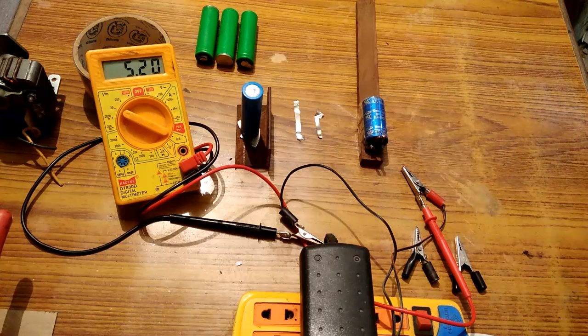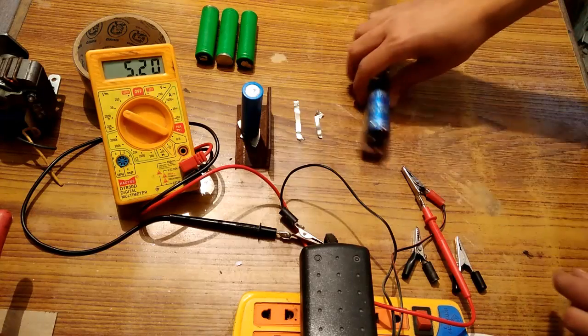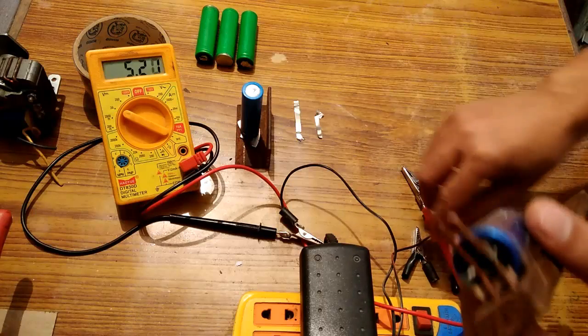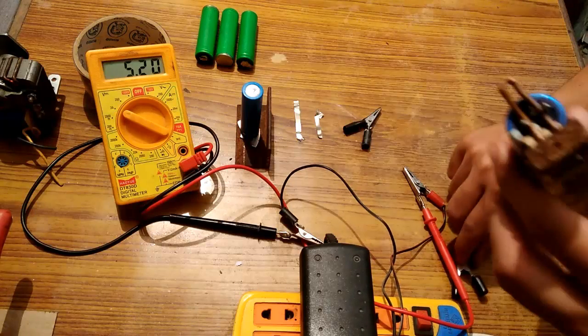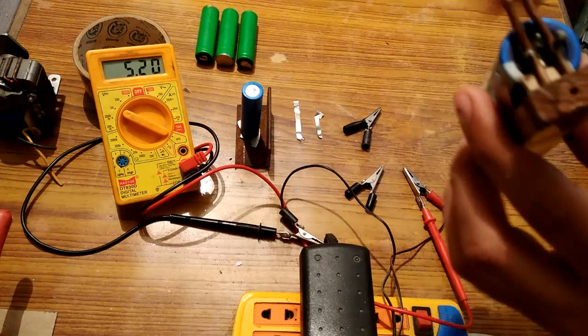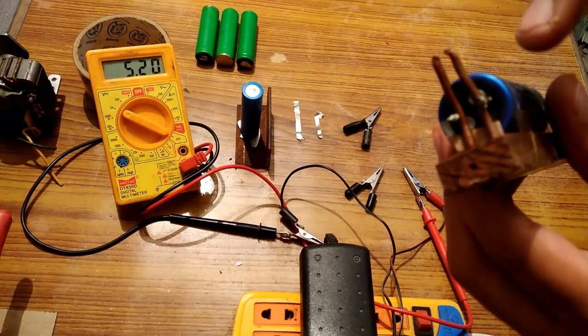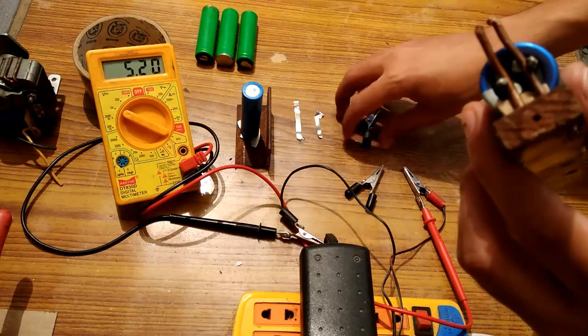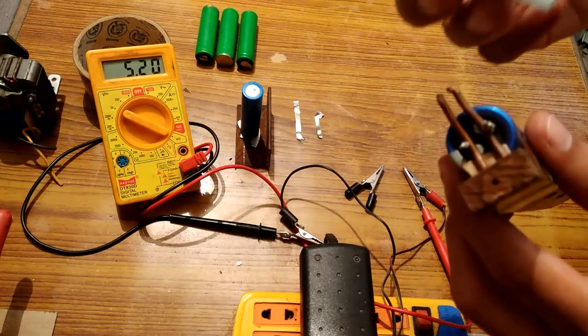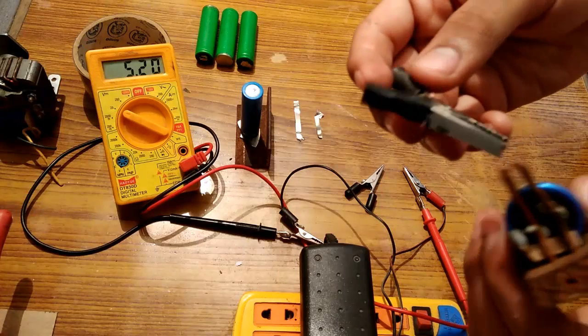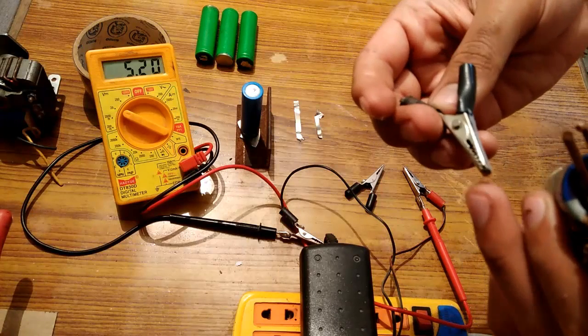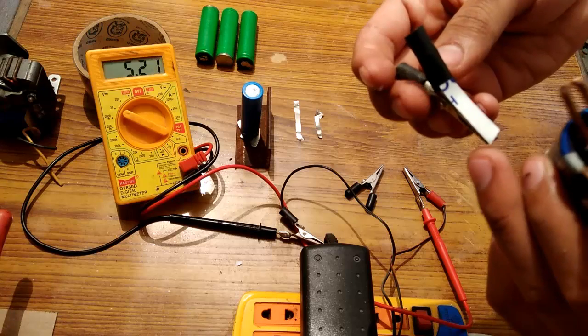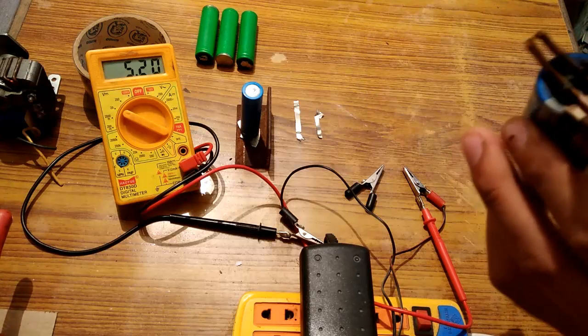I have these two alligator clips. Since it was really difficult to do soldering with these two thick copper conductors, I used these alligator clips. You can see that I have placed this plastic for insulation.